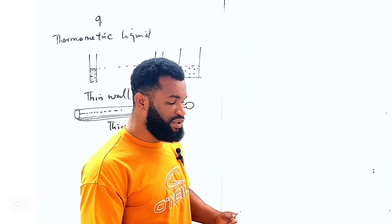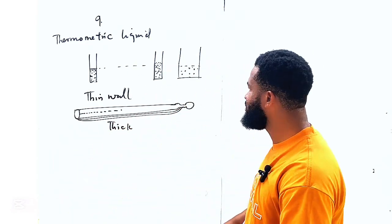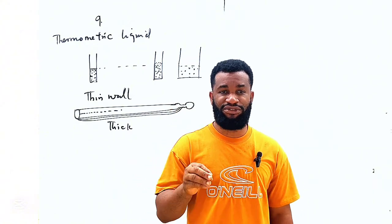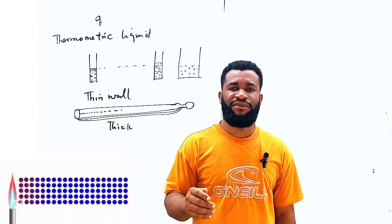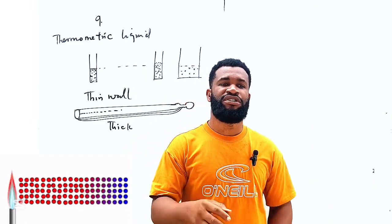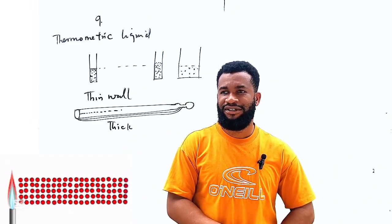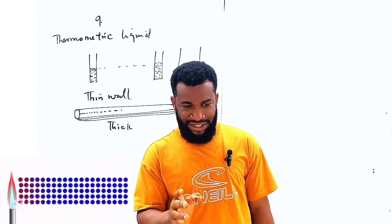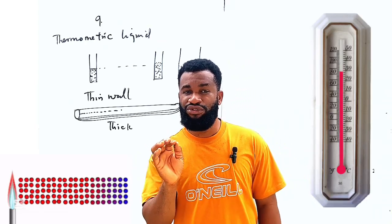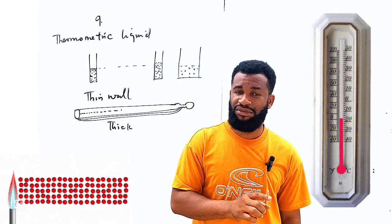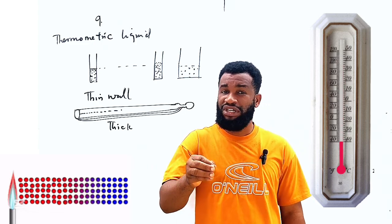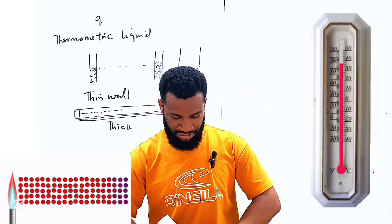The next question asks us to distinguish between heat and temperature. Heat is defined as the total internal energy of a body, or more specifically, as the form of energy in transit due to a difference in temperature. Temperature, on the other hand, is defined as the average kinetic energy of the molecules of a body — that which measures how fast the molecules are moving on average.